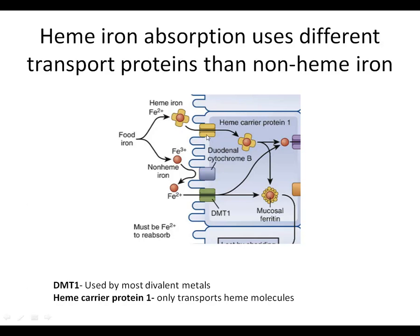So lack of competition is part of the reason. The other reason is that when iron comes in as inorganic form from plant foods, unless you use the acid trick to convert it early, it has to go through an additional step to be converted from the Fe3+ form to the Fe2+ form. That conversion happens with a certain efficiency — it may or may not happen. This is the only form that can pass through the membrane, so the fact that two steps have to happen, and also that there is competition for this single carrier, explains why iron absorption from plant foods is less efficient.